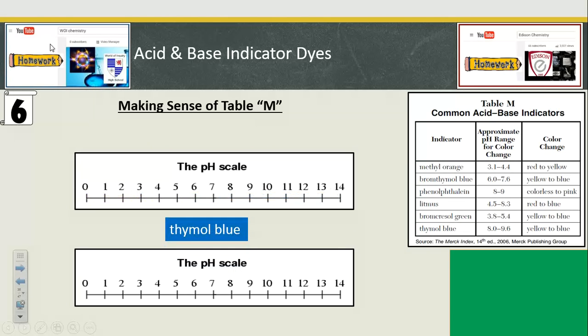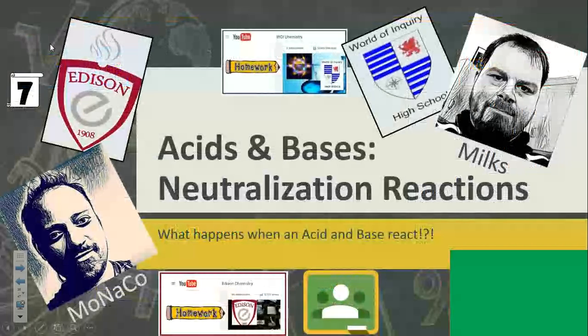Thymol blue. Below pH 8, it's yellow. Above pH 9.6, it's blue. In the middle, between 8 and 9.6, it would be greenish. Okay? And there you have it.